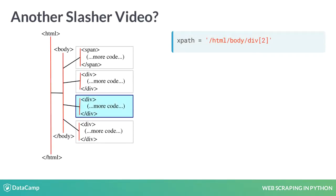To illustrate the sample XPath string we wrote in the last slide, here we have highlighted the div element which would be selected within a tree representation of some HTML. Notice that the number 2 in the brackets of our XPath expression refers to the second div element of the three div elements, ordered from top to bottom as usual, paying attention to the fact that the first child of the body is a span element, so it is not counted when looking at the div elements.